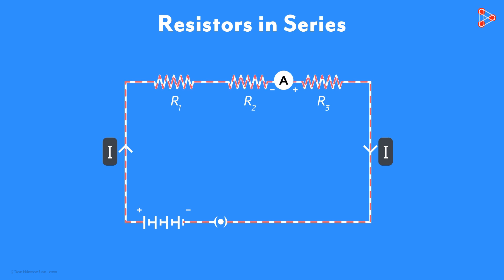Yes, the current is constant at every point in the circuit. It tells us that in a series combination of resistors, the current flowing is the same throughout.